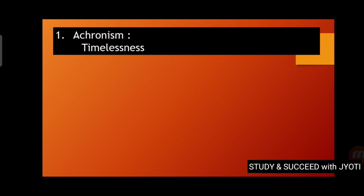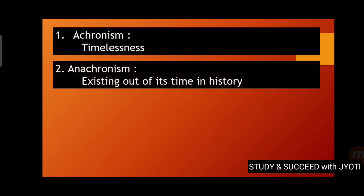Achronism. Achronism means timelessness. Anachronism — it means existing out of its time in history.